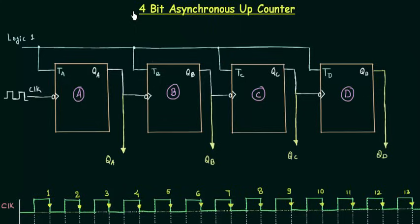In the last presentation we completed a 3-bit asynchronous up counter. Now I want a 4-bit asynchronous up counter, so let's see what changes we have to make. The flip-flops are asynchronous — the clock is not given simultaneously to all four flip-flops.